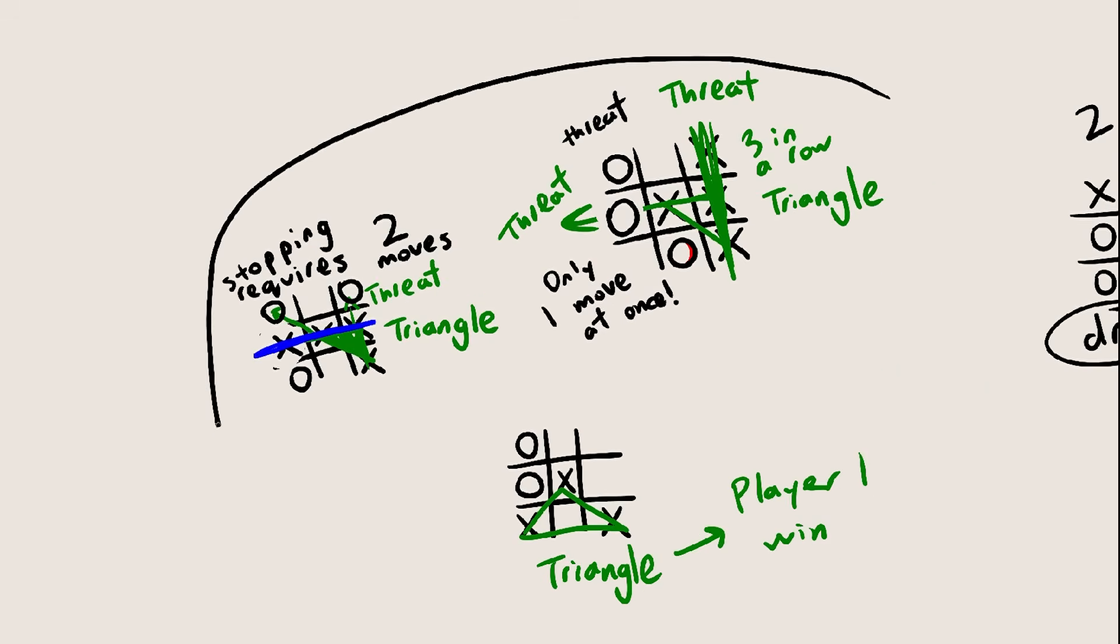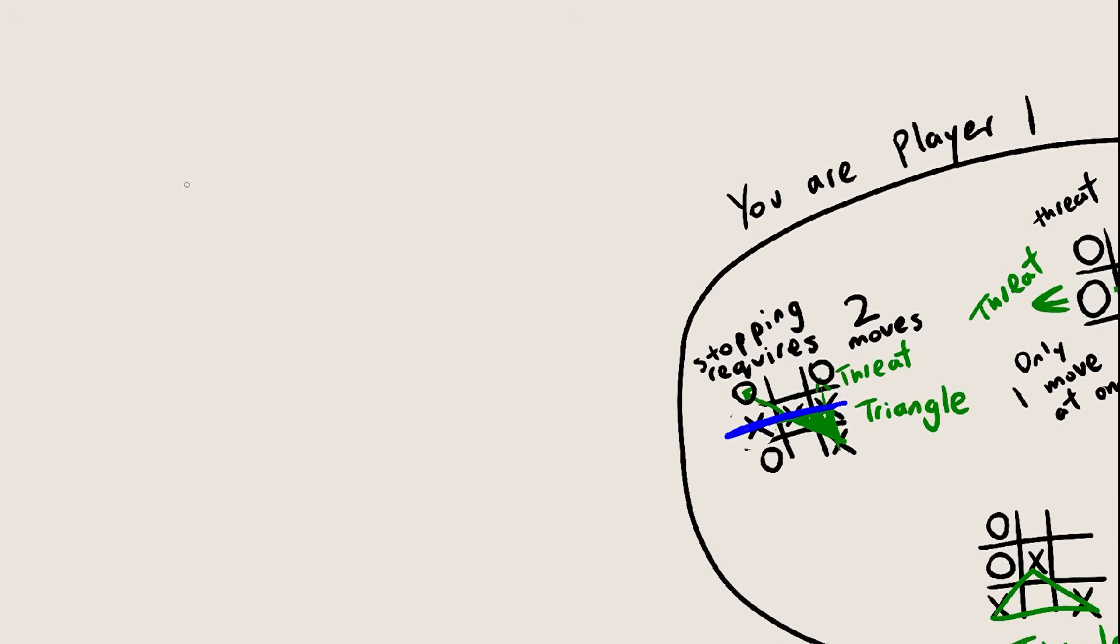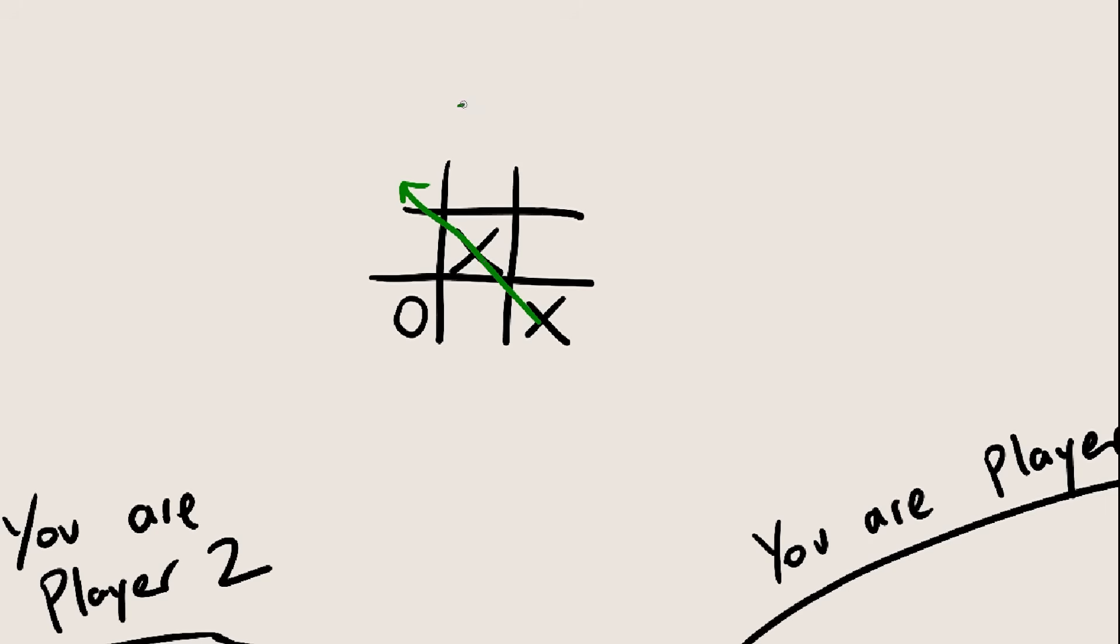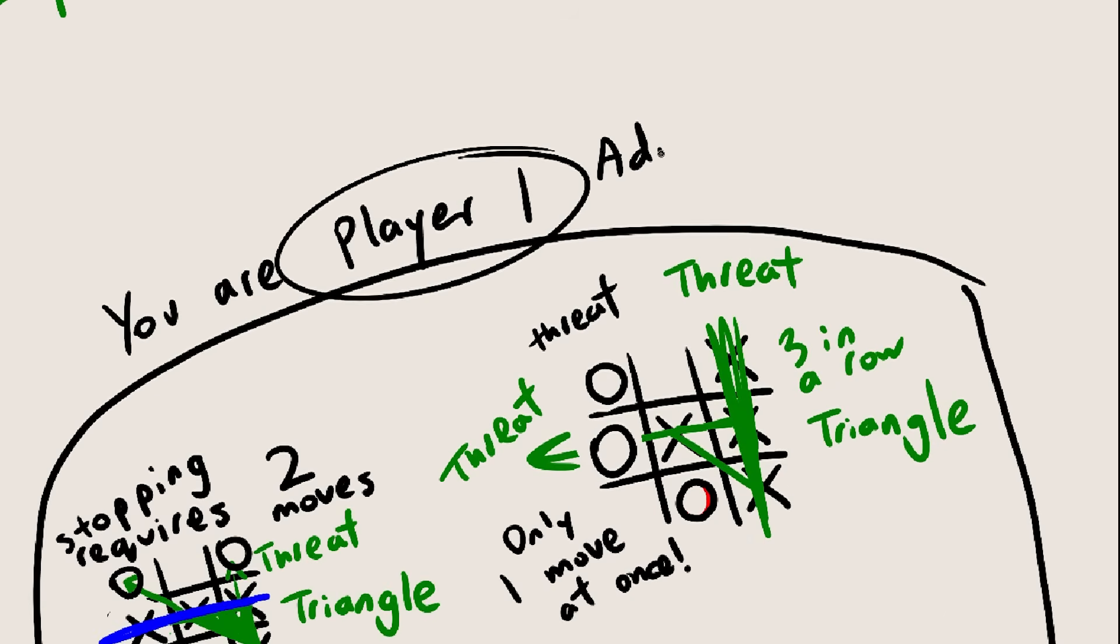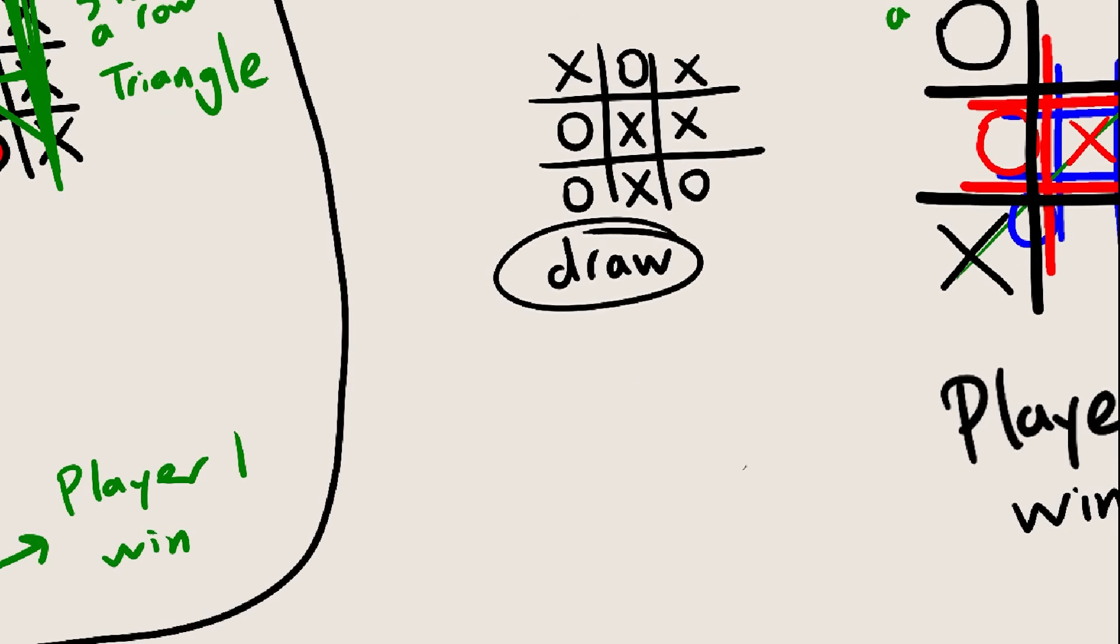But wait a minute. All of this, all of these scenarios have been under the assumption that you're the one going first. Reason is, if you're not going first, there's not really much you can do. Whoever goes first, player 1, gets to create the first threat. So player 2 basically doesn't get a second move. They are forced to go wherever player 1 wants them to go. So even in 2D, player 1 technically has an advantage. The game only ends in a draw because player 2 can just barely hold on by taking the center square, the only safe square.